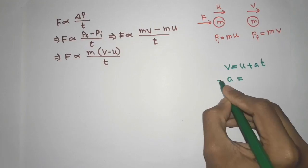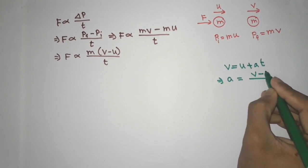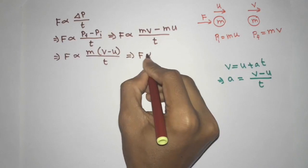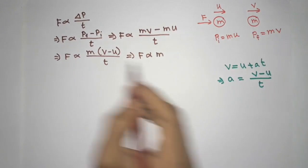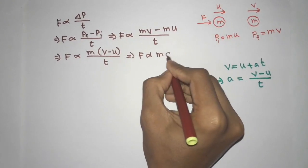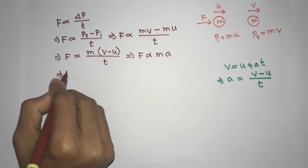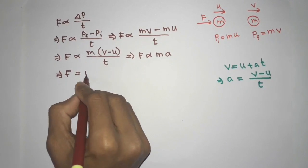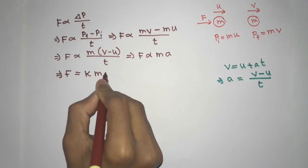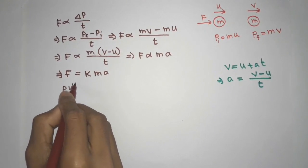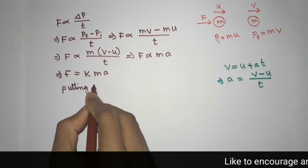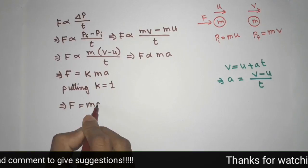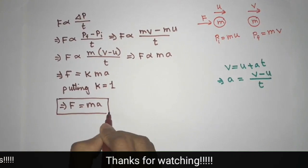If we want acceleration, we will have (v minus u) divided by t equal to acceleration a. So, force is proportional to mass times (v minus u) over t. Substituting acceleration in place of (v minus u) over t, force is proportional to mass into acceleration. To remove the proportionality sign, we put a proportionality constant k, giving us force equals k times mass into acceleration.